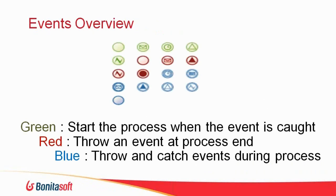Here are some events used in BPMN process diagrams: events for starting, events that happen at the end, and events that happen in the middle. The envelope icon represents a message — a way to communicate between two processes, not to be confused with email. It's a way for one process to send a packet of information to another, allowing processes to start other processes and hand them data. The standard also supports timers, so you can say a process will start on the last business day of the month and the execution engine will start it automatically at the right time.